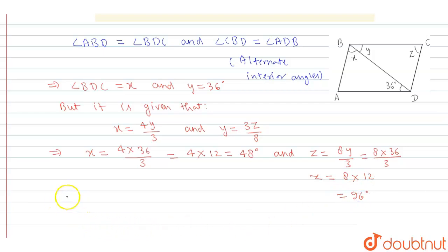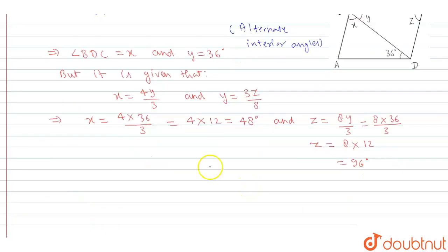Okay, so we can write here in triangle BAD we have angle BAD plus angle ADB plus angle ABD is equal to 180 degrees because we know that sum of all angles in a triangle is 180 degrees.